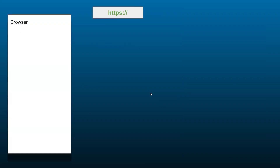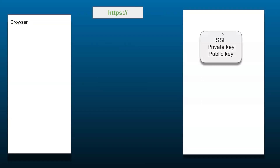Let's see the HTTPS request flow. We have a browser and a server. On the server we deploy our Spring Boot application and configure the SSL certificate. The SSL certificate contains two things: one is a private key and another is a public key.